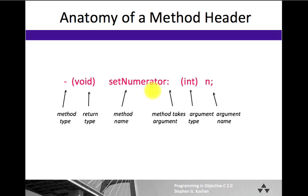So once again, here is setNumerator method, takes one argument, which is an integer called n, and doesn't return a value. And setNumerator is an instance method.